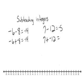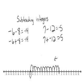And again, you would start at 7, and because 12 is negative, you're going to go in a negative direction, 12 spaces. And you're still going to land in the exact same space, negative 5.